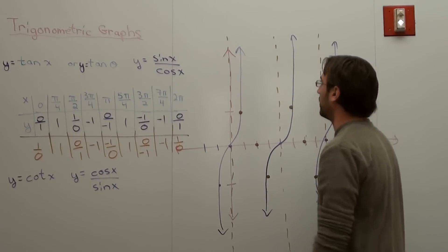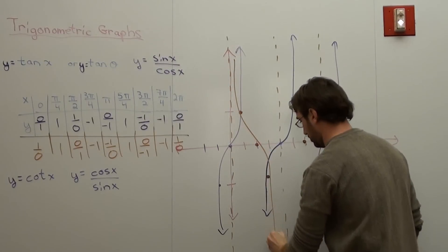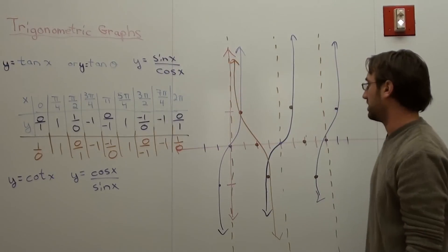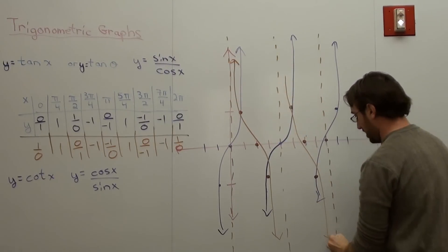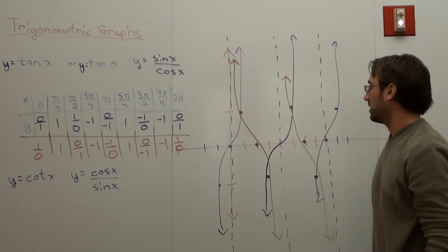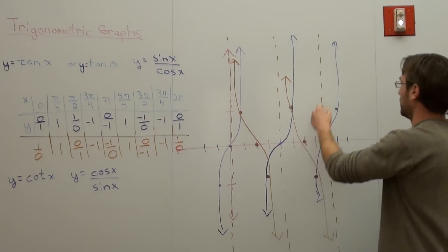So when I graph this bad boy, it's going to look like this. So similar to the tangent, except its vertical asymptotes are changed. It's put to a different direction, and it looks kind of like a phase shift. It looks really cool when you graph the tangent and the cotangent together.